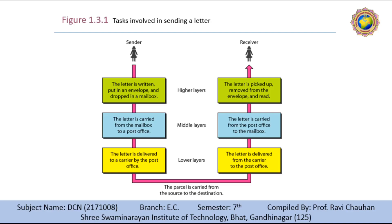So what is the hierarchy? According to our analysis, there are three different activities at the sender side and another three activities at the receiving side. The task of transporting the letter between the sender and the receiver is done by the courier. The tasks must be done in order within a hierarchy. At the sender side, a letter must be written and dropped in the mailbox before being picked up by the letter courier and delivered to the post office. Each layer at the sending side uses the services of the layer immediately below it — the higher layer uses the middle layer, the middle layer uses the lower layer, and the lower layer uses the services of the courier.